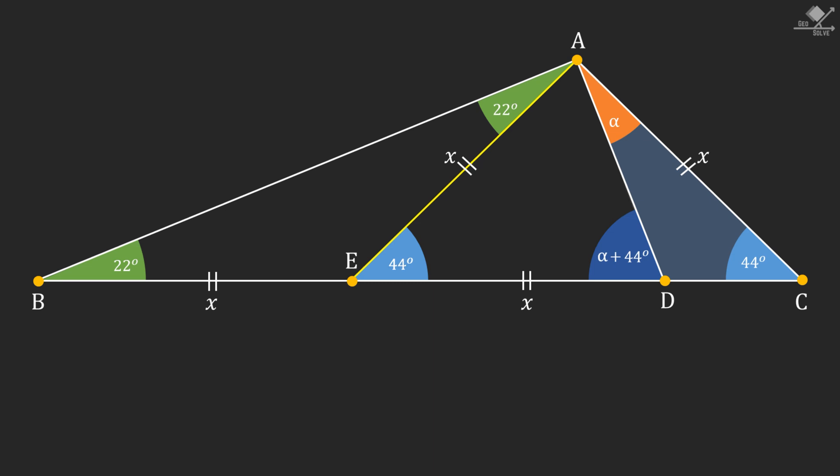Finally, let's focus on this shaded triangle, which is also an isosceles triangle. Therefore, this base angle should also be alpha plus 44 degrees.